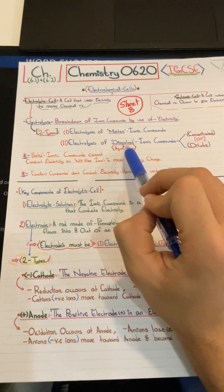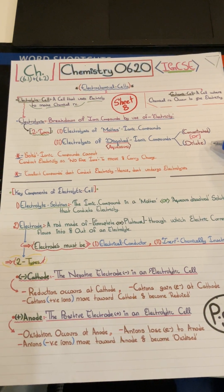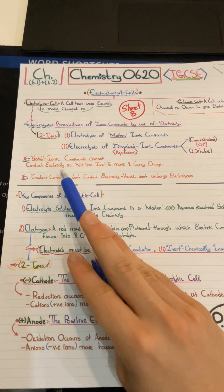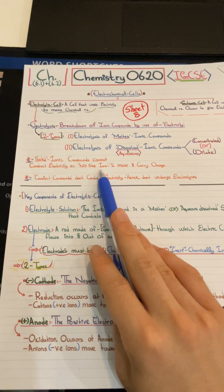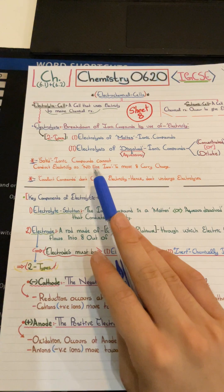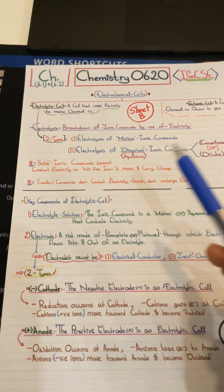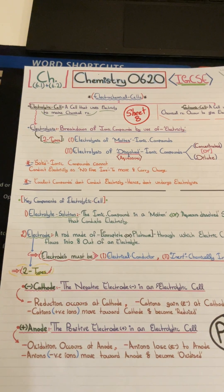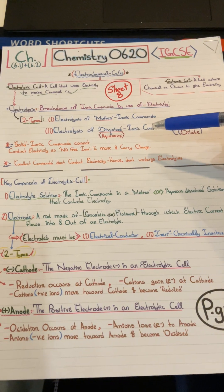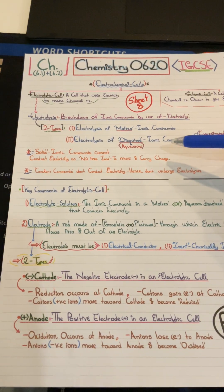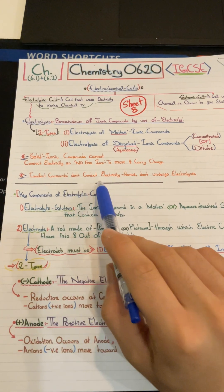Solid ionic compounds cannot conduct electricity because there are no free ions to move and carry charge — all ions are locked in the ionic lattice bonding. Covalent compounds also do not conduct electricity because they do not undergo electrolysis.